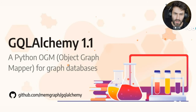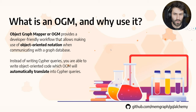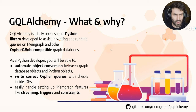Hi everyone, today I'll quickly present GQL Alchemy 1.1, which is a Python OGM, or object graph mapper, for graph databases. An OGM provides an object-oriented notation to communicate with a graph database. Instead of writing Cypher queries, you're able to write code which the OGM will automatically translate into Cypher queries. GQL Alchemy is a fully open source Python library compatible with any Cypher-compatible graph database, and it automatically converts Python objects into something the database understands.